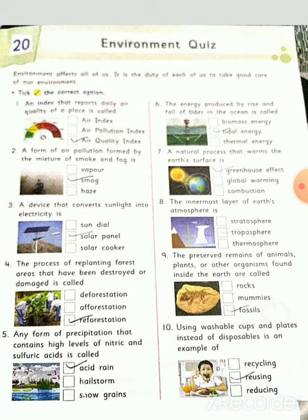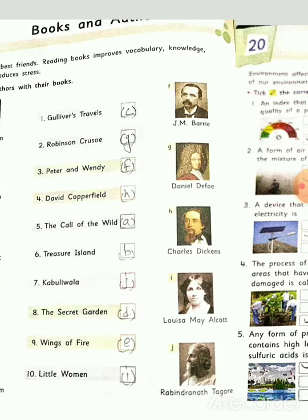Tenth: using washable cups and plates instead of disposable ones is an example of reusing. So students, this is Chapter 19, and definitions about books are given in it.